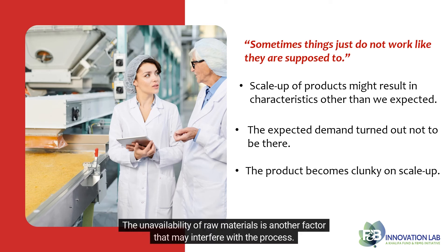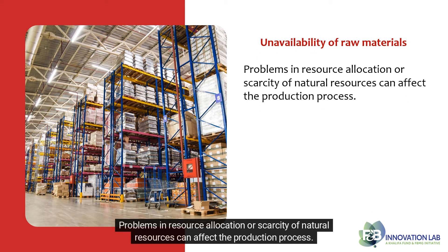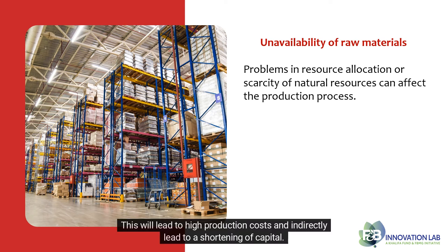The unavailability of raw materials is another factor that may interfere with the process. Problems in resource allocation or scarcity of natural resources can affect the production process. This will lead to high production costs and indirectly lead to a shortening of capital.